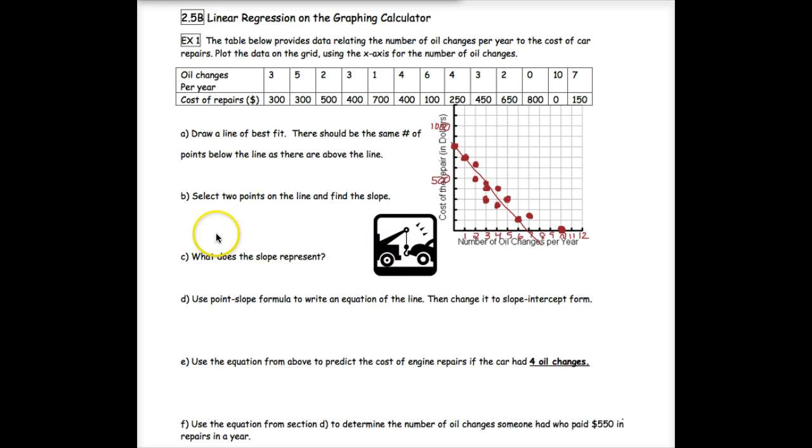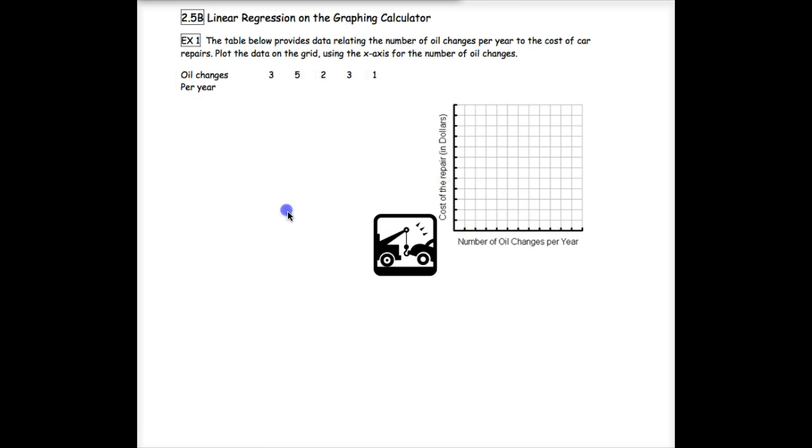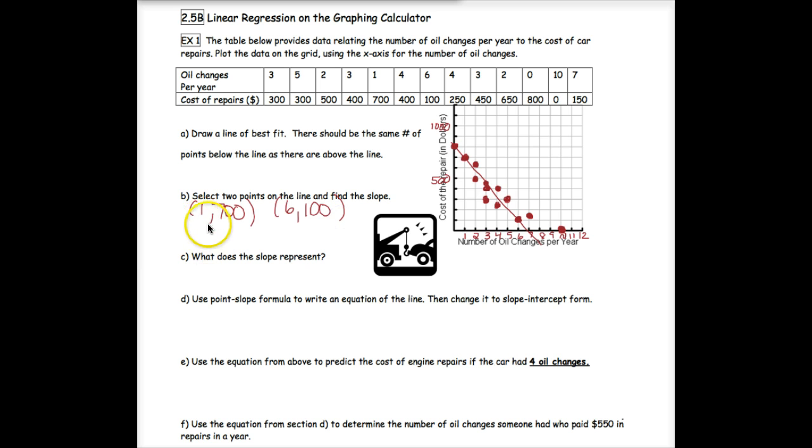Now we need to select two points on the line and calculate the slope. I'm going to use this point right here, so that's (1,700), and then I'm going to use this one on the bottom because you want them to be further away if you can help it, so that's (6,100). Finding the slope y2 minus y1 over x2 minus x1, so 100 minus 700 over 6 minus 1. That gives me negative 600 over 5, which is negative 120.